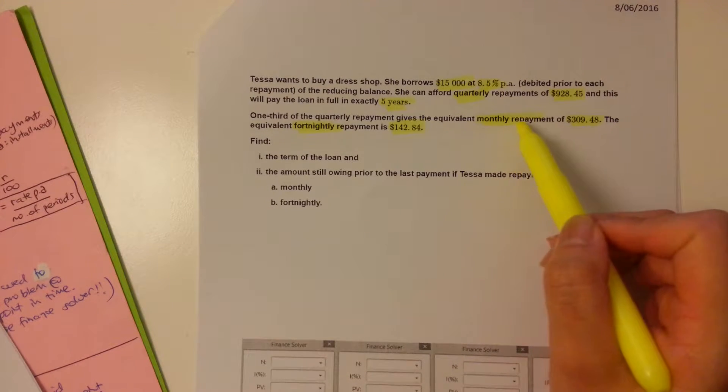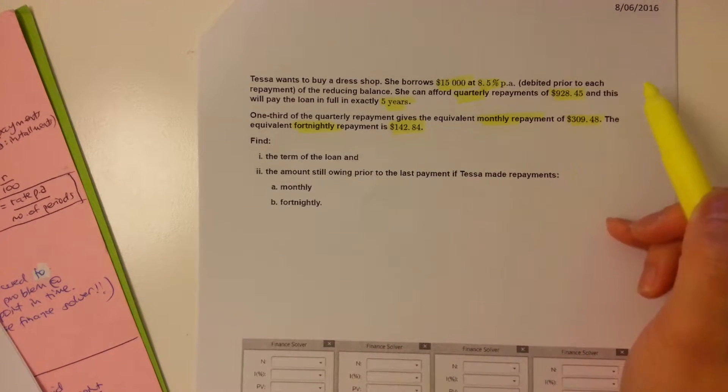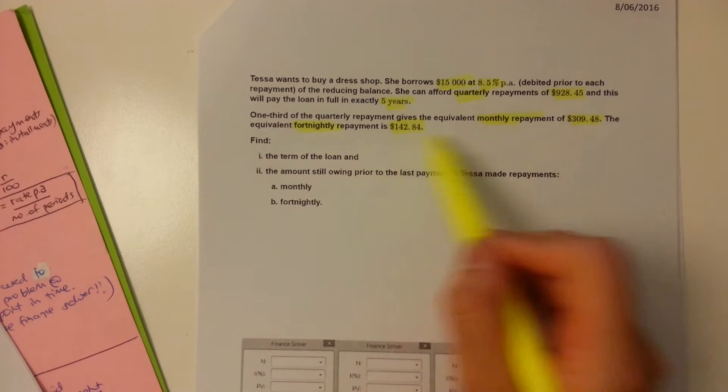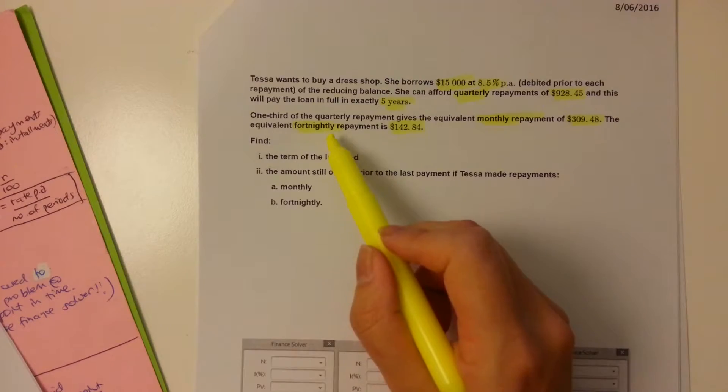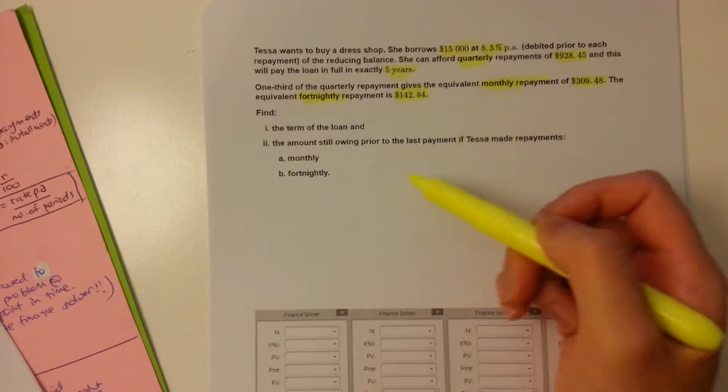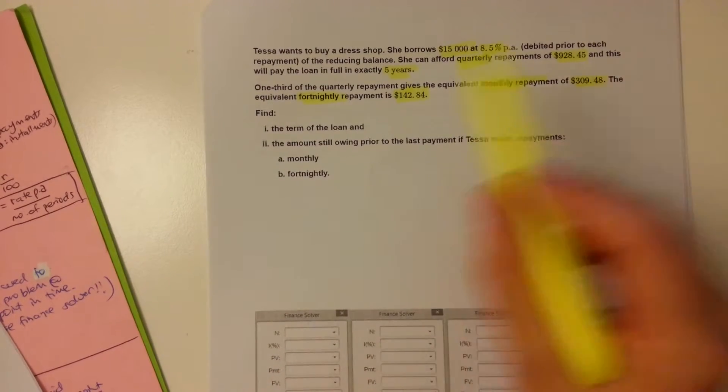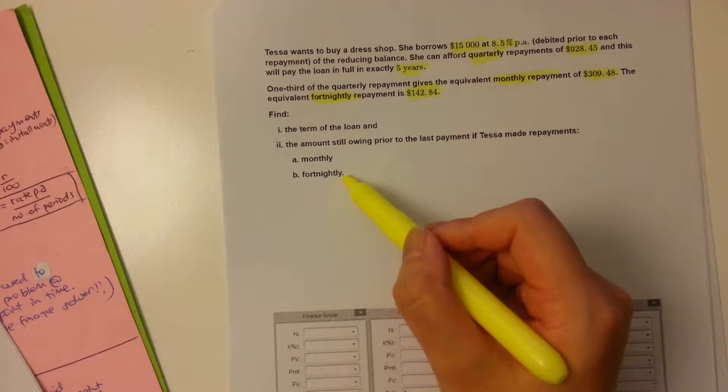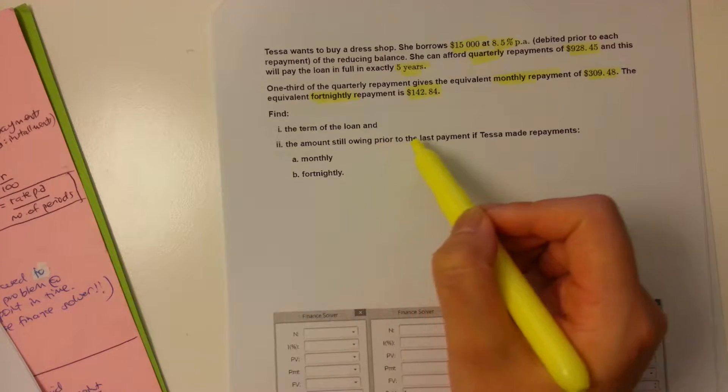Or if she wants to pay monthly, that's technically a third of that amount there. Or alternatively, if she wants to pay fortnightly, that'll just be pretty much half of that, just a little under half of that value. So she's got some options here, and we're going to see what difference it makes if she changes her repayment frequency. So for the monthly and fortnightly conditions, we're going to find the duration of the loan and the amount still owing before the last payment.